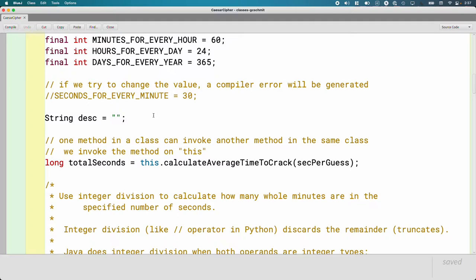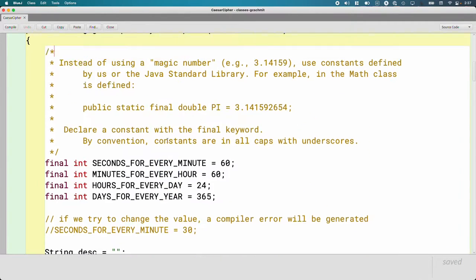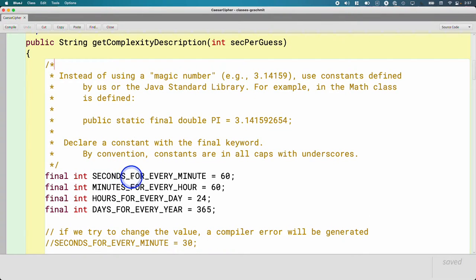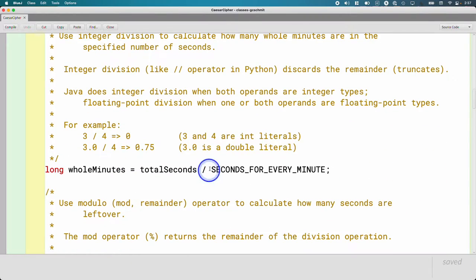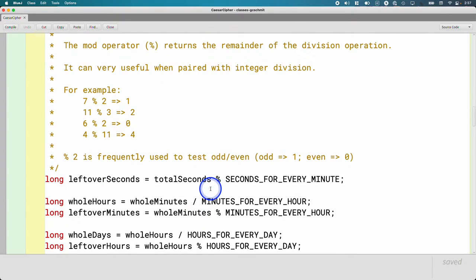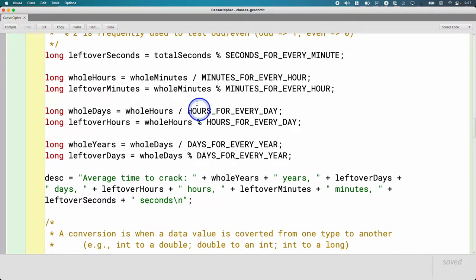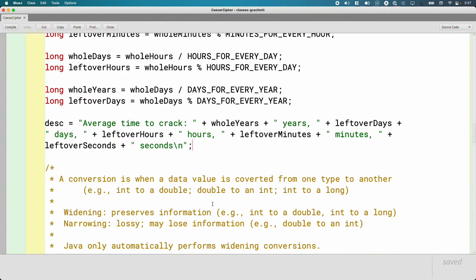It will then calculate the average time to crack the cipher based on that seconds per guess, and the returned result, the resulting number of total seconds could be really big. So we assigned it to a variable of type long because it could be so many seconds. We don't want to just report that to the user because it's such a large number that they might be challenging to comprehend that many seconds. So instead, we're going to convert it to something more understandable.